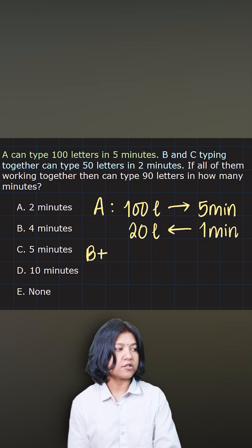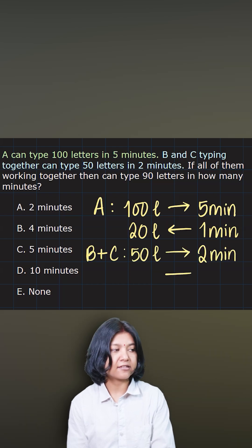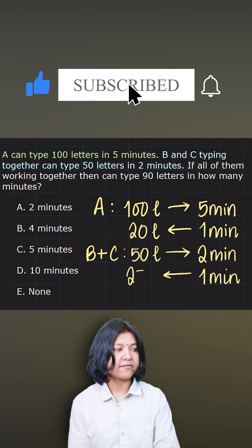B and C together has been given to you now. They cover 50 letters in 2 minutes. So again, dividing both sides by 2, I get the 1 minute work for B and C together. So in 1 minute, they'll cover 25 letters.